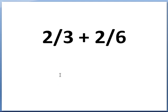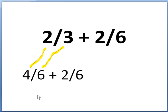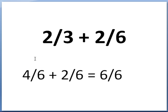Let's take a look at 2 thirds plus 2 sixths. The denominators are not the same — I have to get them to be the same. It turns out that 2 thirds can be turned into 4 sixths, which represents the same value. The least common denominator is 6, because if I double the 3 I get 6, and I then double the numerator to get 4. So 4 sixths plus 2 sixths: 4 plus 2 is 6, and 6 over 6 is equal to 1.